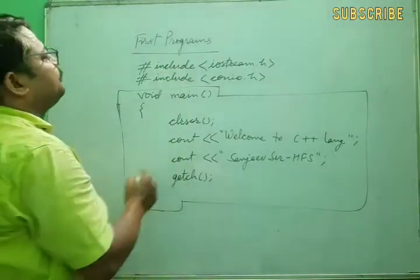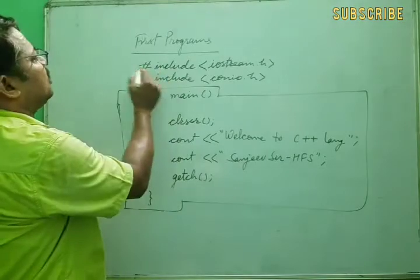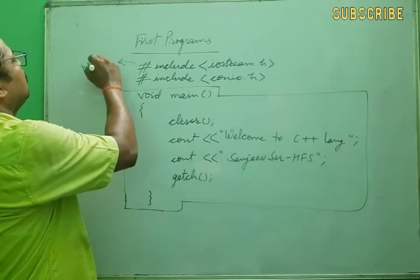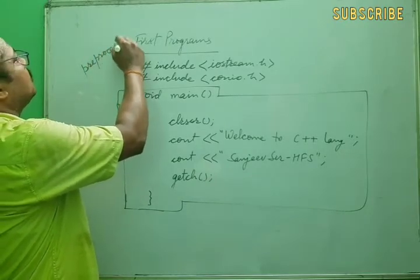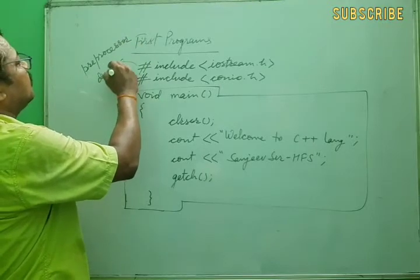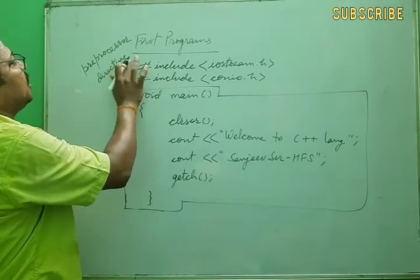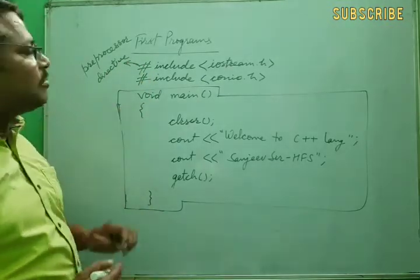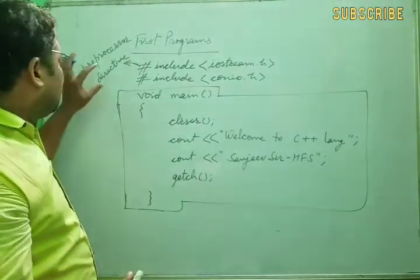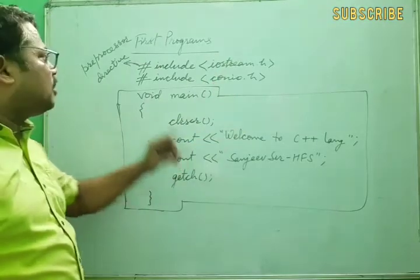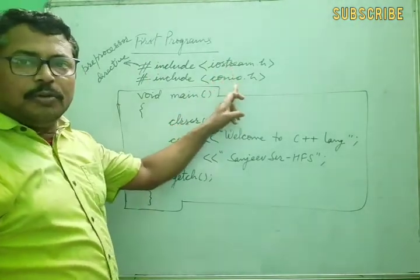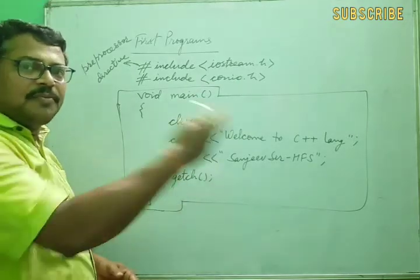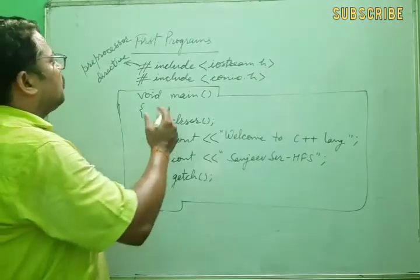These two lines — hash include — are known as pre-processor directives. A pre-processor directive means that before processing the program, it directs the compiler about what type of work is going to be performed in this program and which type of functionality is defined in the C++ compiler.